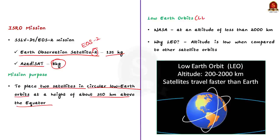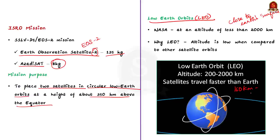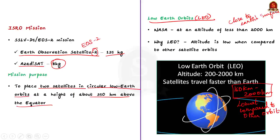A low Earth orbit, or LEO, is an orbit that is relatively close to Earth's surface. As per NASA, it is normally at an altitude of less than 2000 kilometers but could be as low as 160 kilometers above Earth. This altitude is considered low when compared to other orbits. For comparison, aeroplanes fly at an altitude of 14 kilometers above Earth.